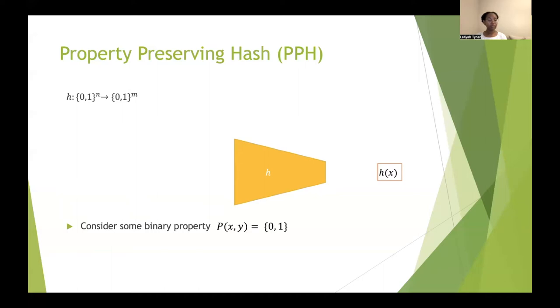We can consider some binary property p, which is equal to 0 if the property does not hold, and 1 if the property holds. And we say that h is a property-preserving hash function for the property p if given h of x and h of y, we are able to determine if p holds.